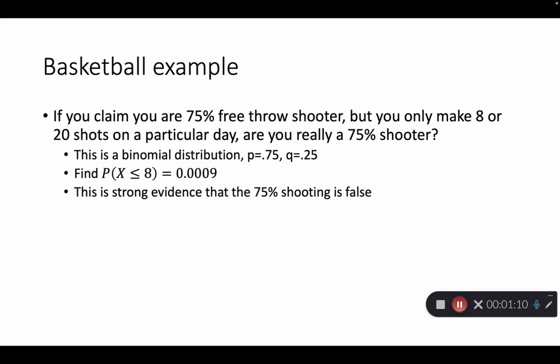And the question then becomes, is that enough for you to say that they were lying about their 75% free throw percentage? Or is that within the realm of possibility of, statistically speaking, that it might be acceptable that you might have as low as eight on that shooting range, right, on 20 shots.